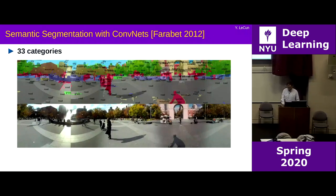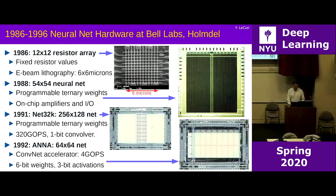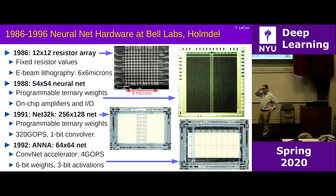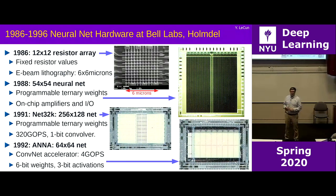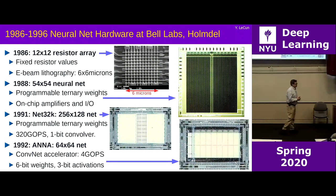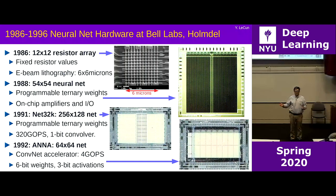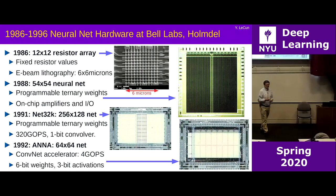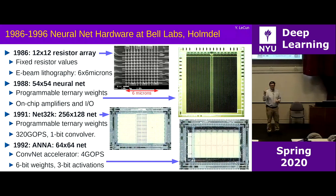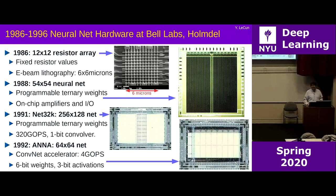Back in the 80s, people were interested in implementing special hardware to run neural nets fast. There were several neural net chips actually implemented by people in the same group as me at Bell Labs. This was a hot topic in the 1980s, then died with interest in neural nets in the mid-90s. Now, the hottest topic in chip design is neural net accelerators — at any computer architecture conference, like ISSCC, half the talks are about neural net accelerators.